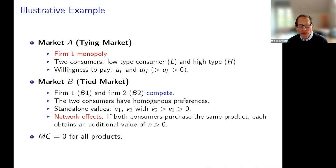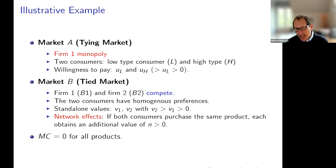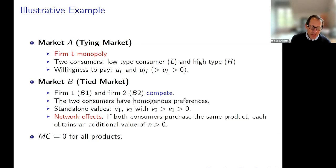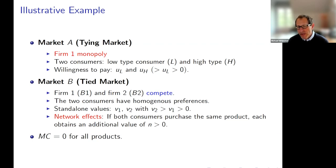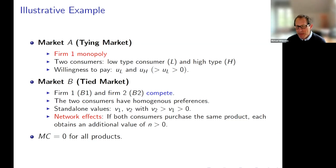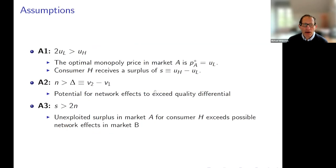The two consumers have homogeneous preferences for the two products in market B — there's no heterogeneity among consumers. There's a standalone value for the two products — by standalone I mean ignoring any possible network effects — of v2 and v1. v2 is the willingness to pay for product two, which exceeds the value for product one. So firm two's product B2 is better than product B1.